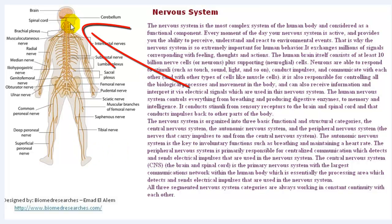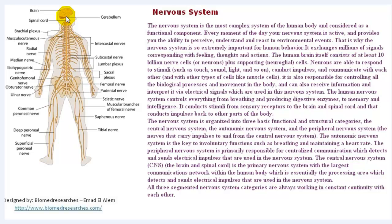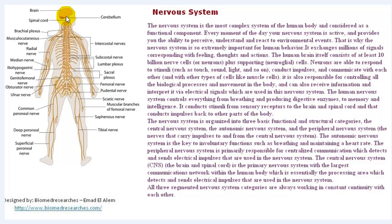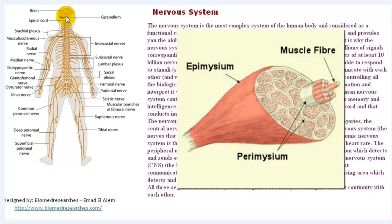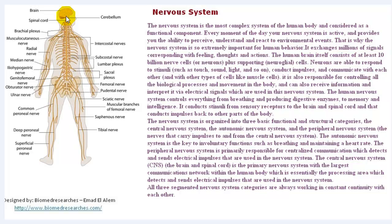As shown here, it exchanges millions of signals corresponding with feelings, thoughts, actions, and related to the different parts of the body. The human brain itself consists of at least 10 billion nerve cells or neurons, plus supporting cells. Neurons are able to respond to stimuli such as touch, sound, light, and so on, conducting pulses and communicating with each other and with other types of cells such as muscle cells. Neurons are also responsible for controlling all biological processes and movement in the body, and can receive information and interpret it via electrical signals used in the nervous system.